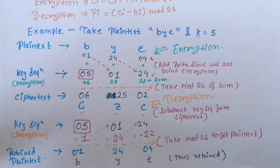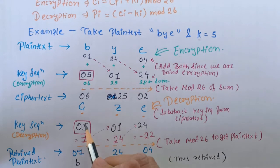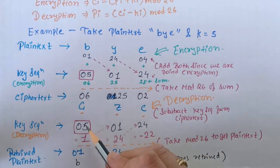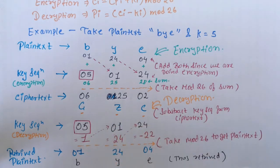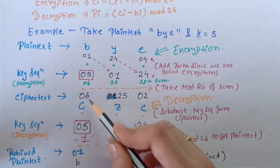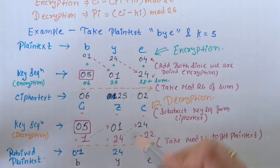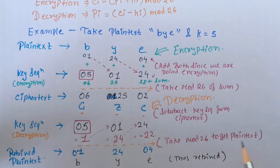For decryption, we use the same predetermined key (5) and subtract each sub key from the cipher text. The answer of each subtraction is used as the next sub key. So: 6 − 5 = 1 (used as next sub key), 25 − 1 = 24 (used as next sub key), then taking mod 26: 1 mod 26 = 1, 24 mod 26 = 24, and (2 − 24) mod 26 = 4. Thus we retrieve the plain text 'bye'.